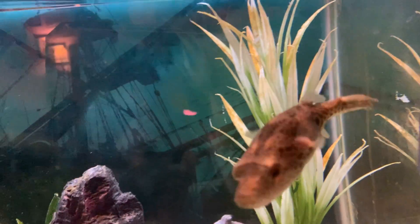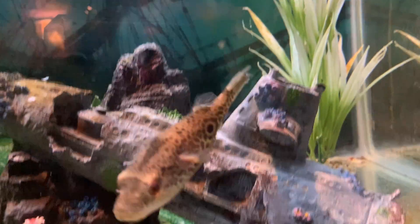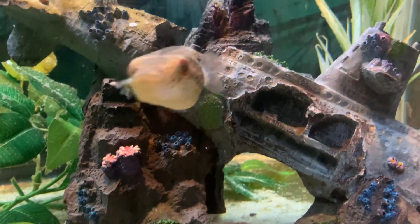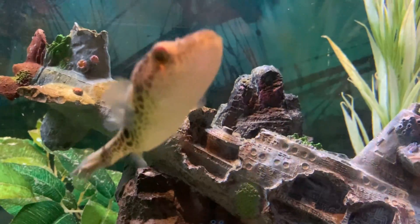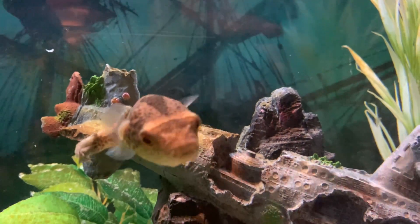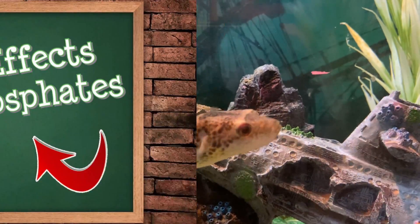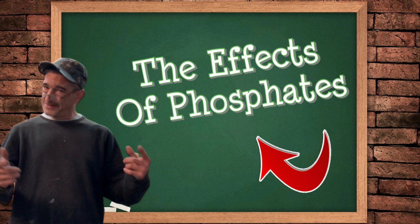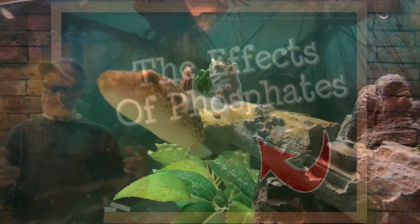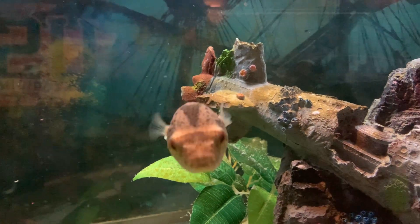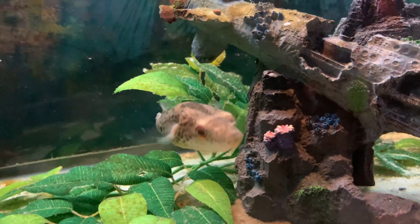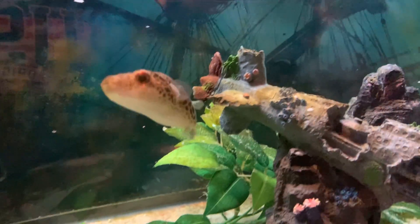If the aquarium is not properly maintained, the phosphate levels will continually rise and contribute to algae growth. Testing for phosphate and learning about its sources will help you combat these effects. Phosphate does not directly harm your fish even at really high levels, but the algae blooms that result from elevated phosphate can cause problems for your aquarium inhabitants. Green water can deplete the oxygen, which in turn can harm the fish.